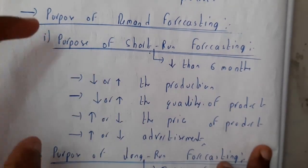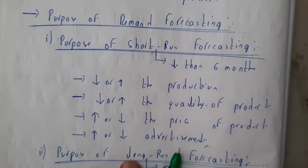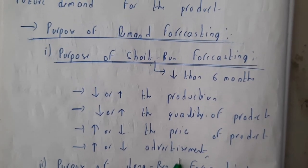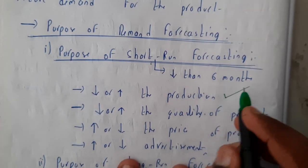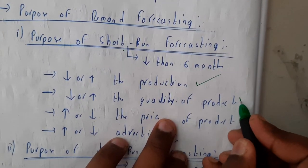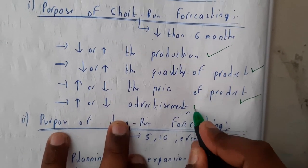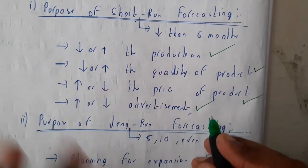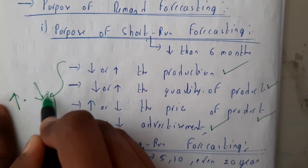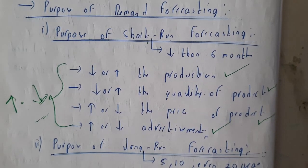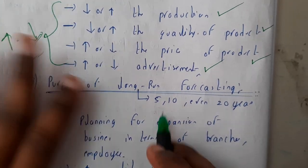What is the purpose of demand forecasting? Let us see the situations in long-term and short-term. In the short run, if it is a small business, they will have an idea about whether they should increase the production or not, increase or decrease the price, or adjust advertising. They get a clear idea whether to increase or decrease any of these things.